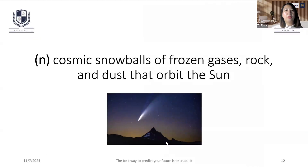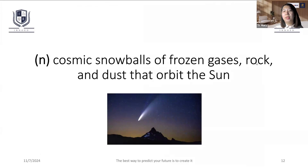The celestial body is the cosmic snowballs of frozen gases, rock and dust of the sand. So, the celestial body is the celestial making of stones, rock and scrolls in the universe.